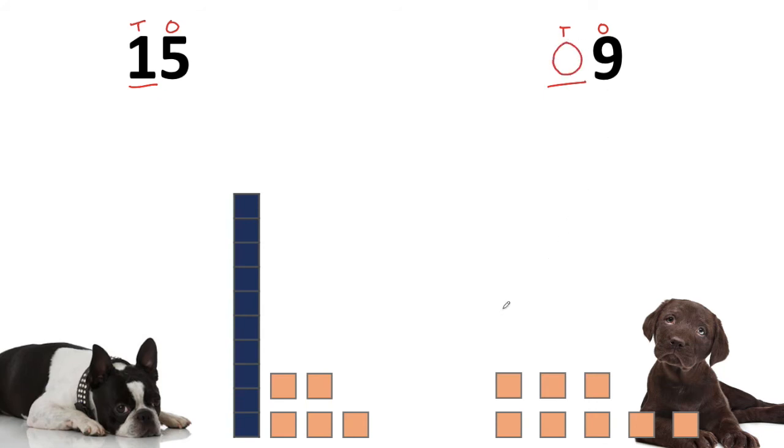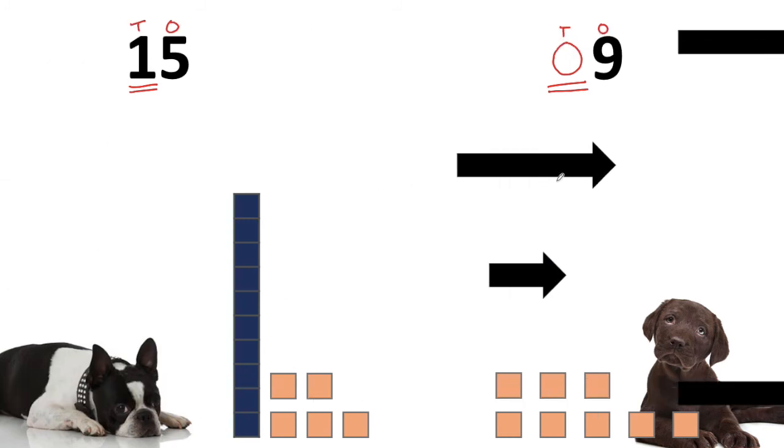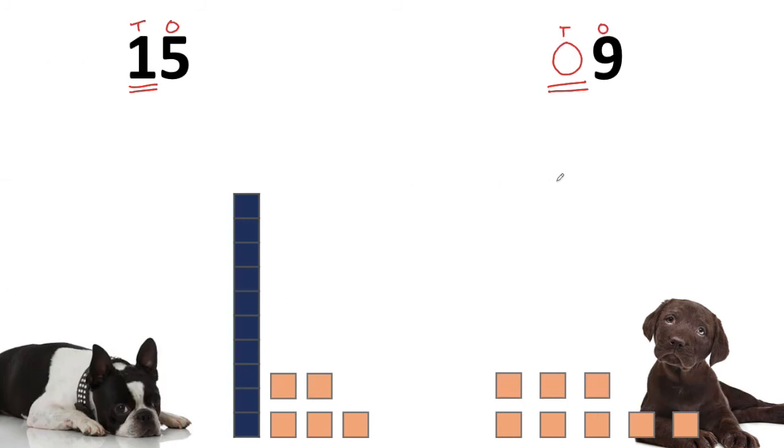When we compare numbers, we have to look in the biggest place first. So when we look in the tens place, we see that 15 has one ten and 9 has zero tens. When we read from left to right, we can say that 15 is greater than 9.